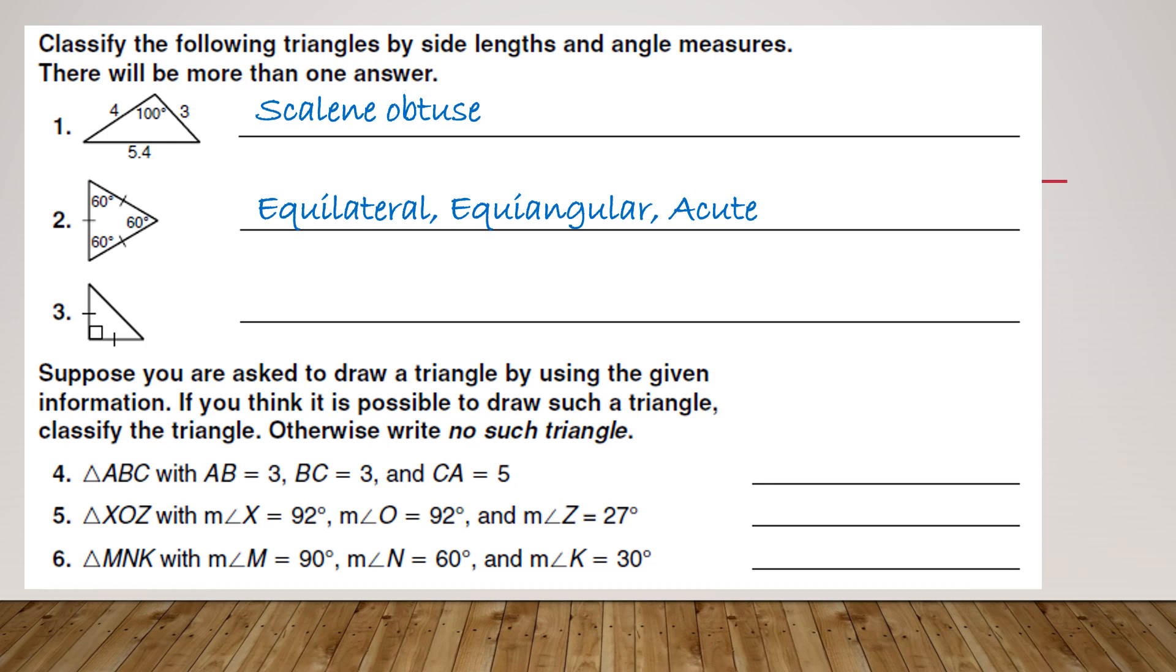And then the last one, we have that box there. So we know already that it is a right triangle. And then the two tick marks mean that it is isosceles, making an isosceles right triangle.